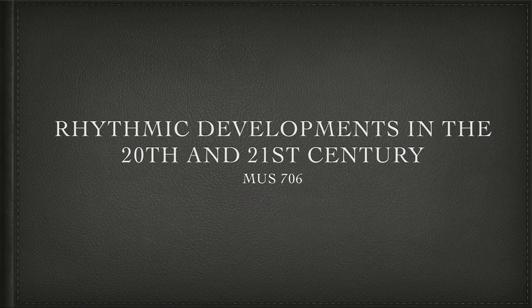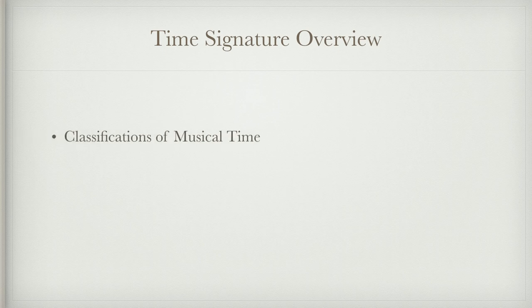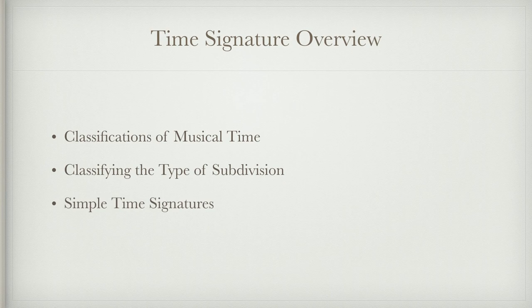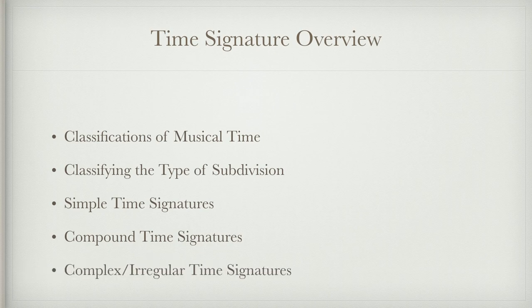This week we're going to be talking about rhythmic developments in the 20th and 21st century. A lot of this might be a review. We're going to start with the concept of simple and compound time signatures and then expand from there. We'll discuss the ways we can classify musical time, types of subdivision, simple time signatures, compound time signatures, and then get into a brief discussion of complex and irregular time signatures.